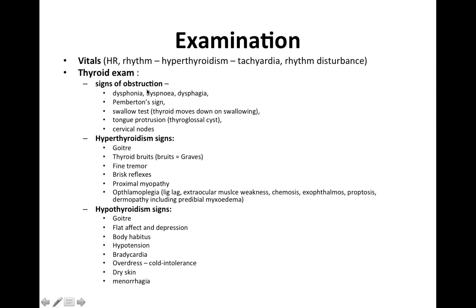Signs of obstruction include dysphonia, dyspnea, dysphagia, Pemberton's sign, and the swallow test — the thyroid moves down on swallowing; with tongue protrusion, a thyroid cyst would move up. Also assess for cervical lymphadenopathy. Look for hyperthyroid signs, for example a thyroid bruit, which suggests it is hyperactive because it is caused by increased vascular flow through the thyroid.